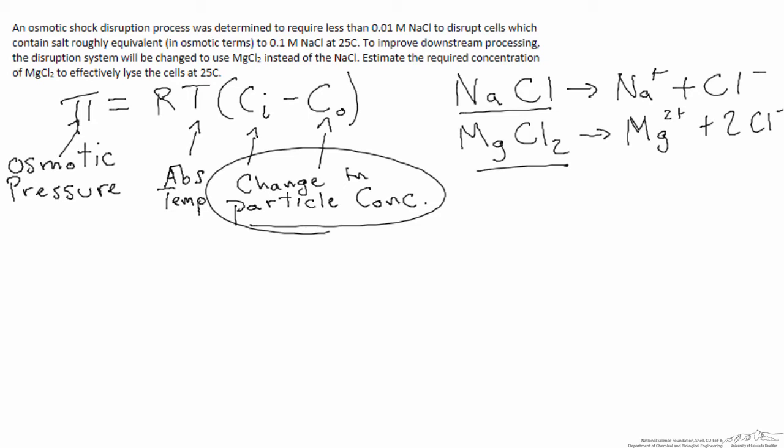Our overall approach in this problem is to first determine the osmotic pressure currently being exerted across the system to disrupt the cells using sodium chloride. Then we'll calculate what concentration change of magnesium chloride would be needed to exert that same osmotic pressure across the membrane to give the same osmotic shock to lyse the cells.